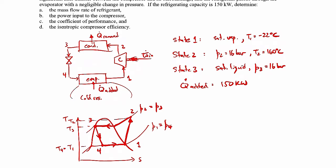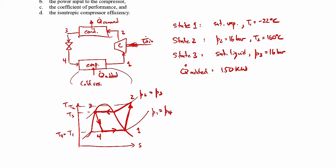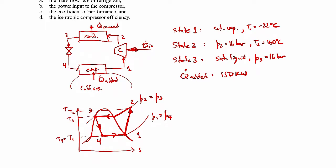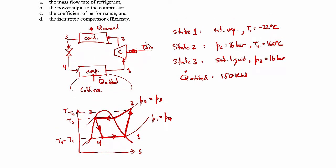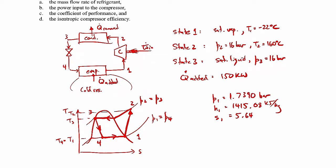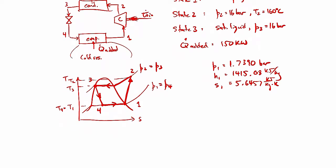To find the mass flow rate, we first need the specific enthalpies at all states, so we go to the property tables. For state 1, the pressure corresponding to saturated vapor at minus 22 degrees C is P1 = 1.7390 bar. The specific enthalpy h1 = 1415.08 kJ/kg, and specific entropy s1 = 5.6457 kJ/(kg·K). For state 2, which we're already given the pressure and temperature for, it's a superheated vapor.